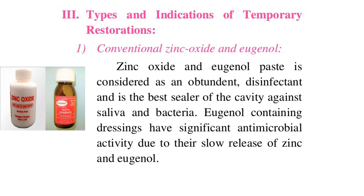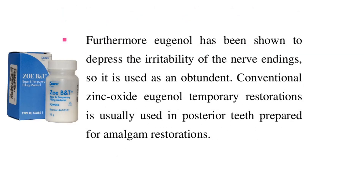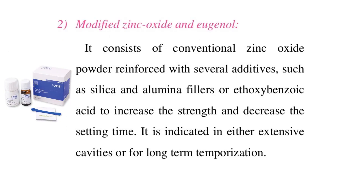Types of temporary restorations. First, conventional zinc oxide and eugenol (ZOE): ZOE paste is considered an obtundant and disinfectant, and is the best sealer of the cavity against saliva and bacteria. Eugenol-containing dressings have significant antimicrobial activity due to their slow release of zinc and eugenol. Furthermore, eugenol depresses the irritability of nerve endings, making it an obtundant. Conventional ZOE is usually used in posterior teeth prepared for amalgam restorations.